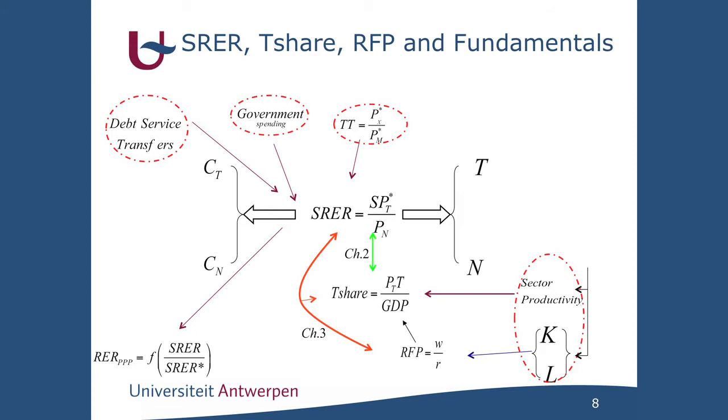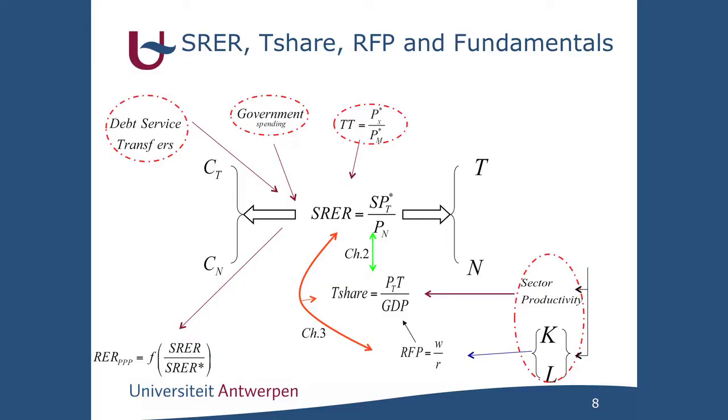The structural real exchange rate, the tradable goods share in GDP, and the relative factor prices are endogenous variables that are interrelated and determined by fundamentals such as sector productivities, factor endowments, and terms of trade. Government spending also matters because it changes the demand for all goods and therefore the structural real exchange rate, the tradable goods share in GDP and the relative factor prices. Similarly, when an economy receives external transfers or must pay interest on its debt, consumption patterns change, affecting all these variables.